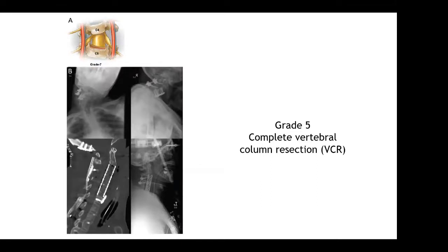Grade seven is a complete vertebral column resection. It's pretty rarely used in the cervical spine outside of tumor settings, but allows for essentially complete correction.